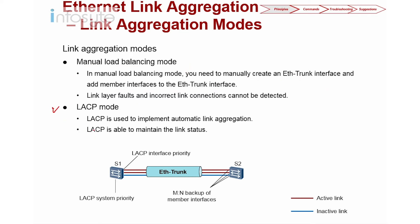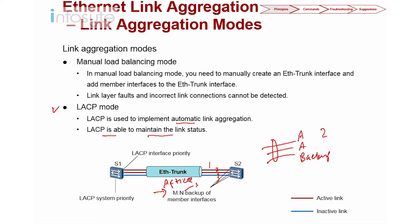The other mode, which involves negotiation, is LACP mode. LACP is used to implement automatic link aggregation and is able to maintain link status. For example, with three interfaces in the EtherTrunk, if the maximum active links is set to two, then two are active and the third is a backup. This uses the M:N concept, where M is the number of active interfaces you configure, and N is the number of backup interfaces.